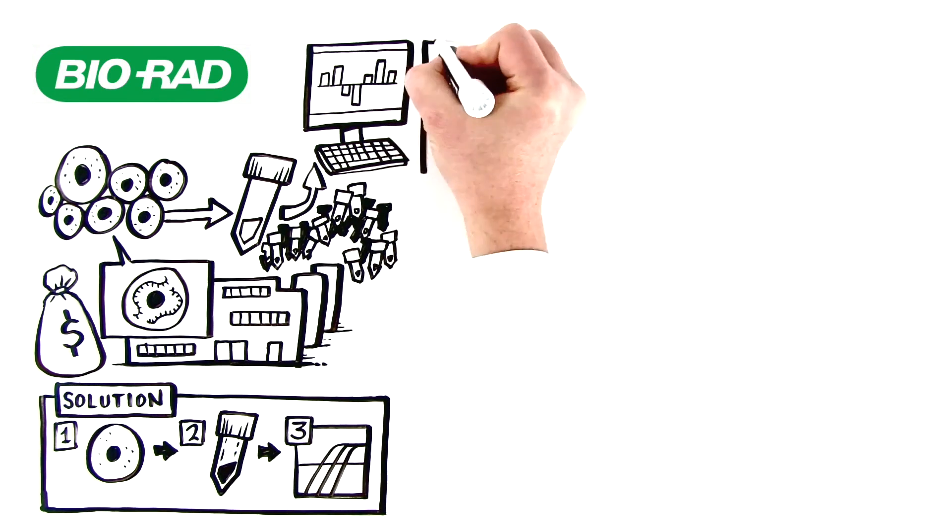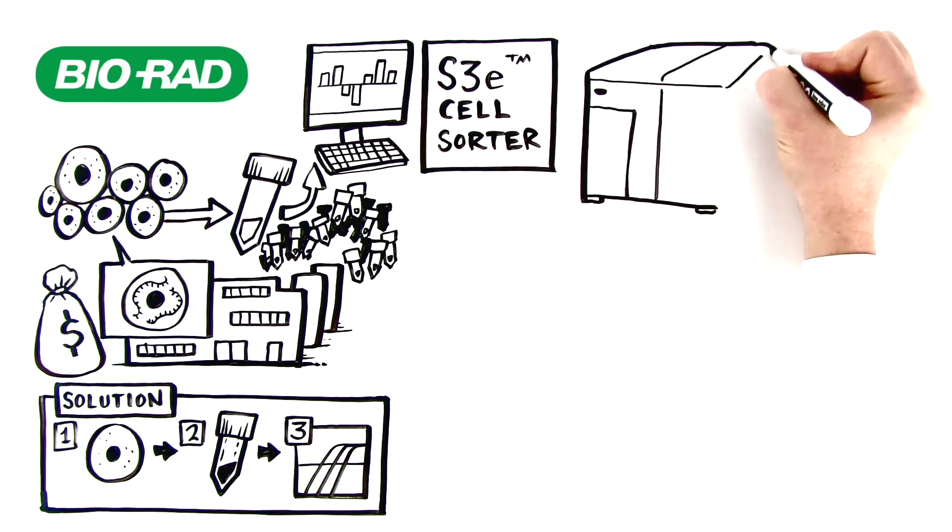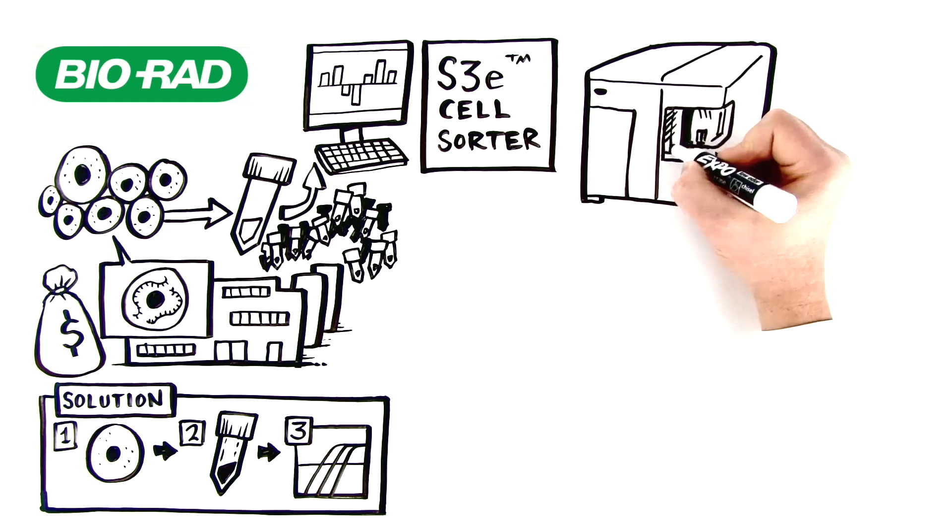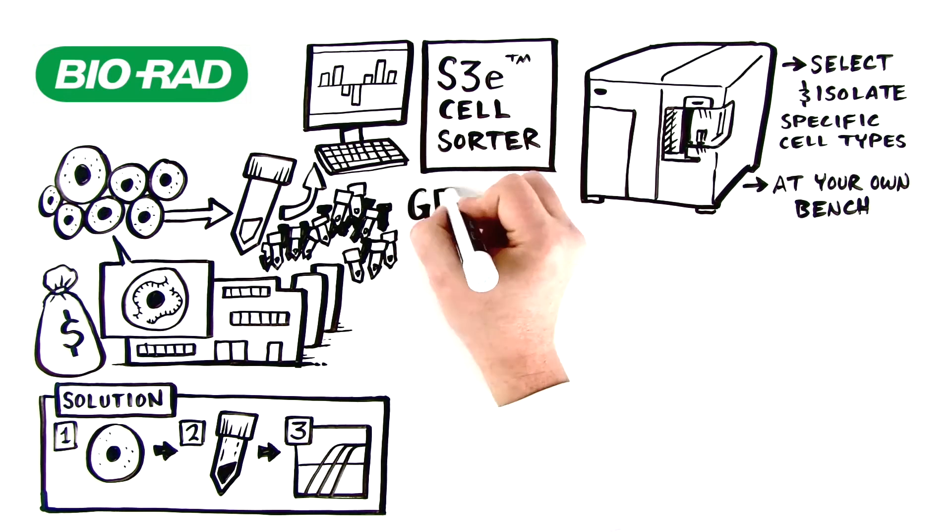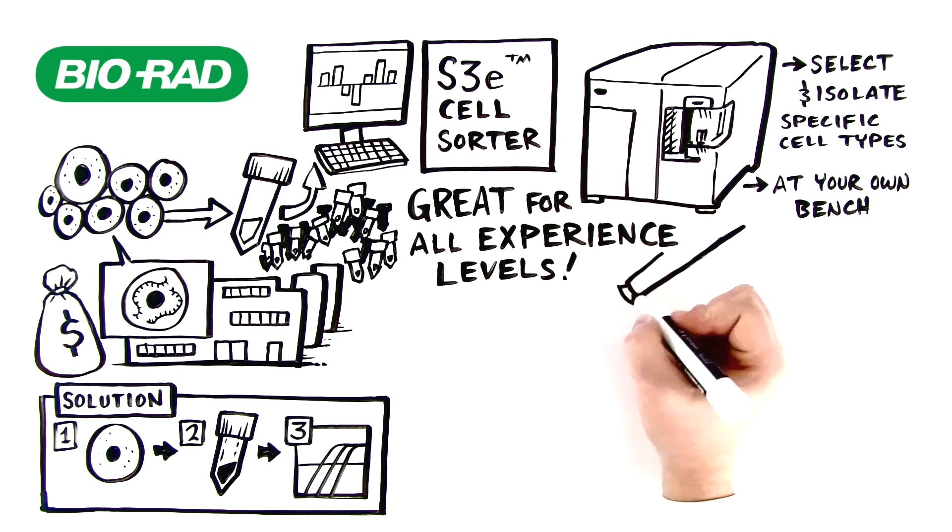With the S3E cell sorter, researchers can isolate single cells in their own lab without waiting to use a core facility. Users can be up and sorting quickly, selecting and isolating specific cell types without the need for extensive flow cytometry expertise.